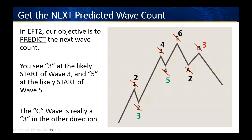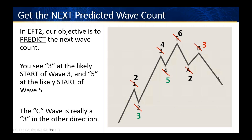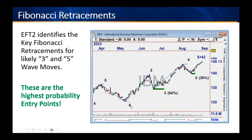The other thing EFT2 does is measure the Fibonacci retracement levels of these waves. Elliott observed that when a retracement — where price comes back against a move — hits one of these numbers, it very likely confirms that the next wave is starting. Those numbers are 38%, 50%, and 62% of the prior move. Our software marks these waves as they occur and identifies where Fibonacci levels are hit, displayed as very nice, solid, thick lines on the chart, making them very easy to spot.